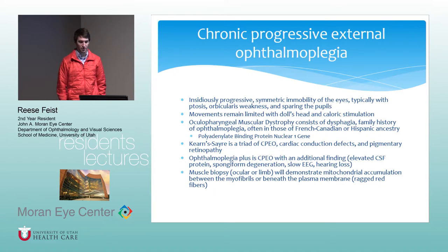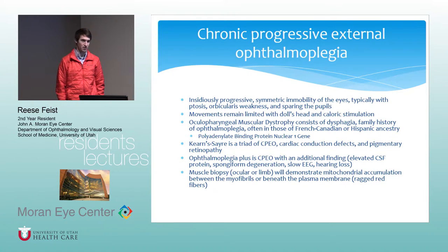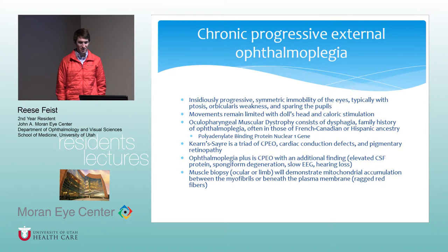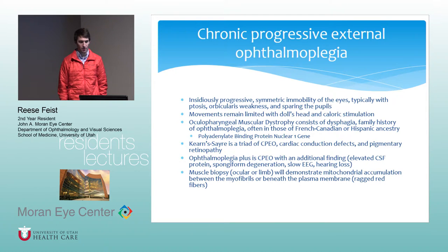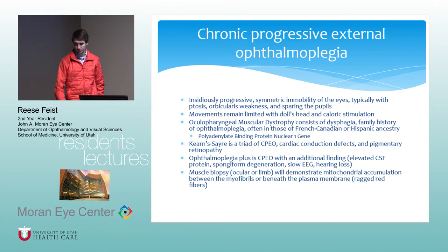CPEO plus conditions include CPEO with additional findings that can be quite variable: elevated CSF protein, spongiform degeneration of the brain or brain stem, slowed EEG, and hearing loss. On muscle biopsy — either ocular or limb — you should see ragged red fibers, representing mitochondrial accumulation between the myofibrils or beneath the plasma membrane.